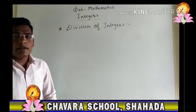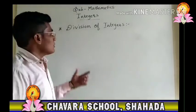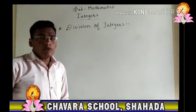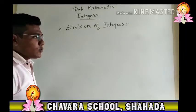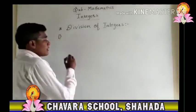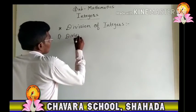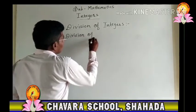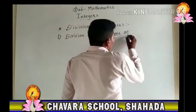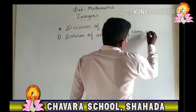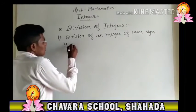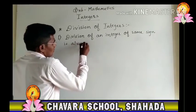As you know that the multiplication of integers, the division also has rules and properties. We will see them one by one. The division also has two rules. The first rule is: division of integers of the same sign is always positive.